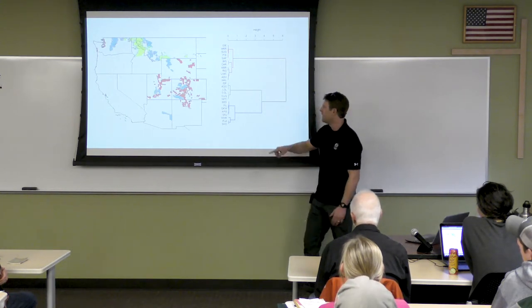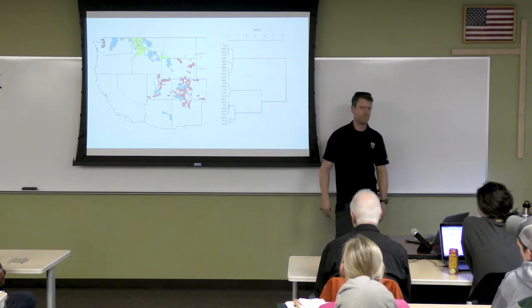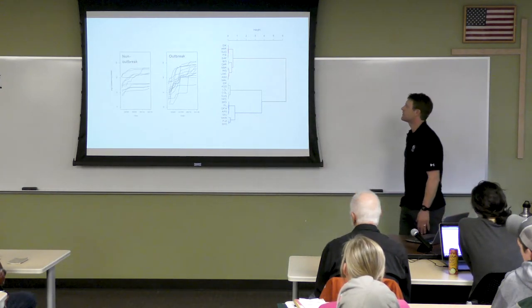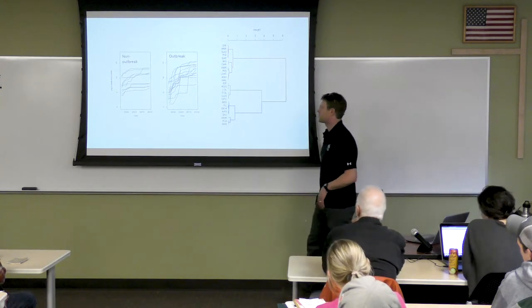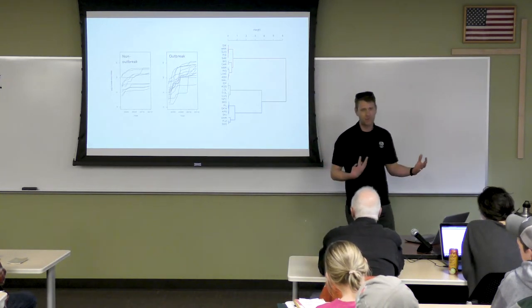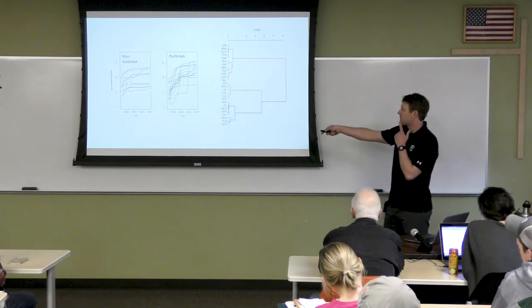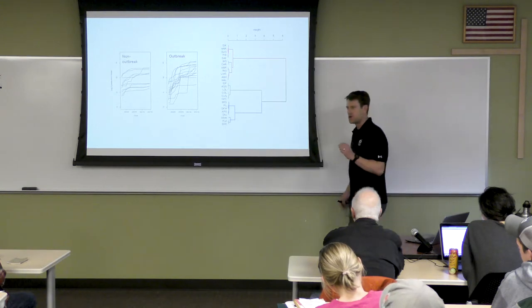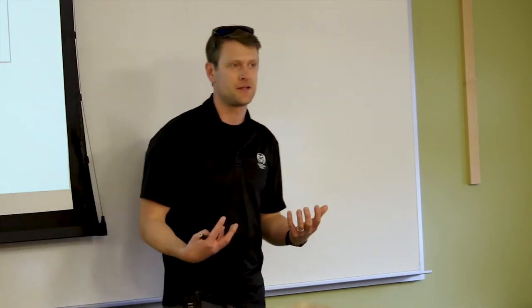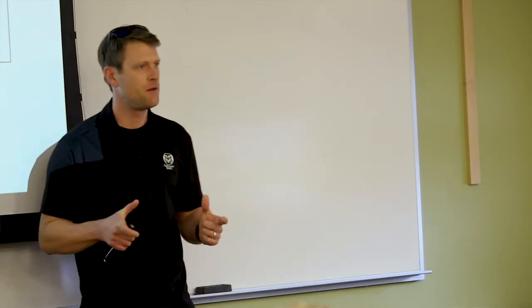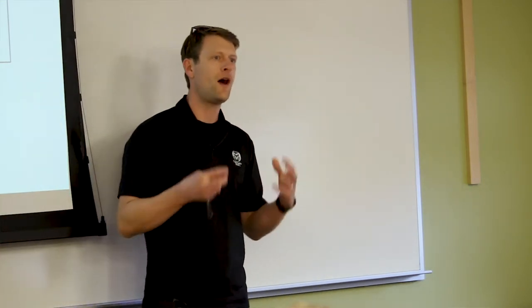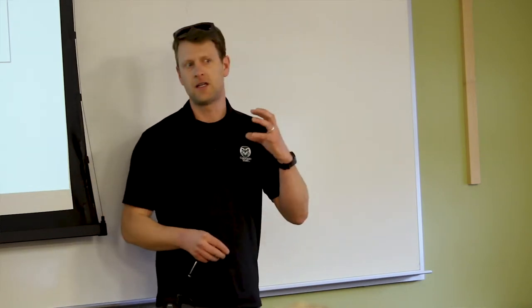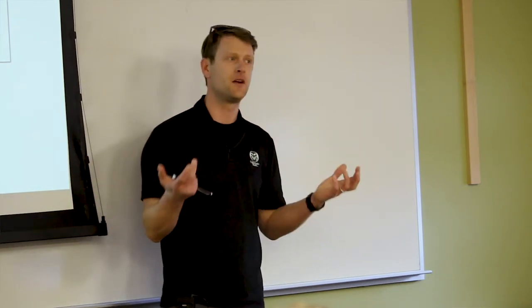Comparing the rate of change in the tree mortality signal between outbreak and non-outbreak populations, the slope of the line is a lot different — change over time in terms of tree mortality is occurring really rapidly in these outbreak populations. This allowed us to use this population-based outbreak framework to ask how climate is driving bark beetle outbreaks in outbreak versus non-outbreak populations and whether there's a difference.